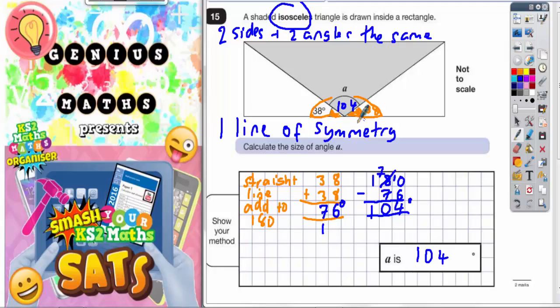Just to recap, this is angles on a straight line so we need to add up to 180. If this is 38, then this is 38 because the isosceles triangle has a line of symmetry. Take your two 38s, which is 76, off 180, and you're going to get 104.